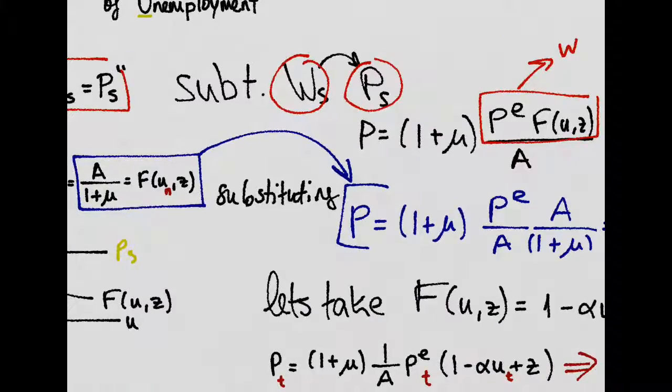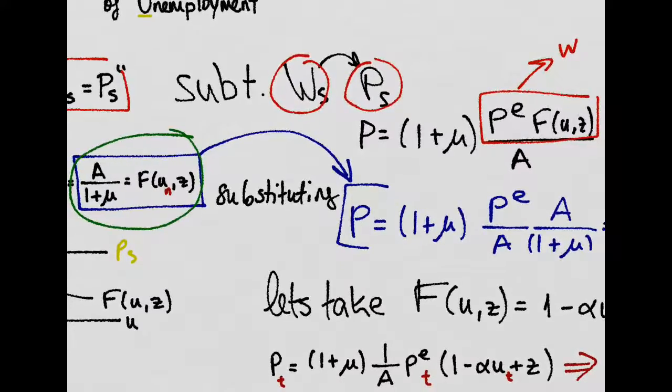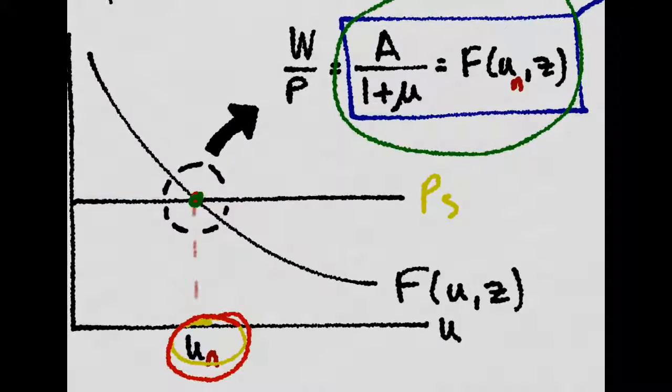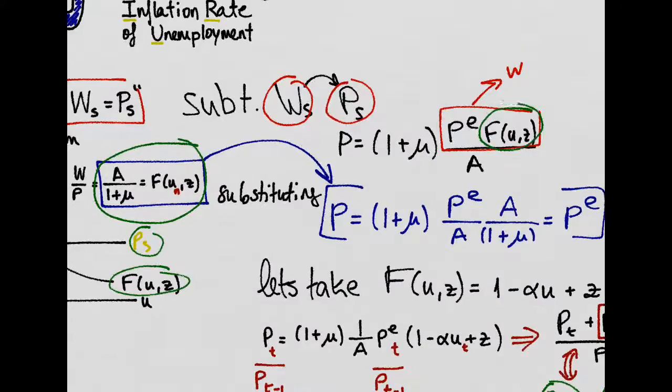And we know that in the equilibrium of the labor market, A over 1 plus the markup is equal to this function. Recall that we are right here when wage setting is equal to price setting. So this function here is interchangeable with this expression here.